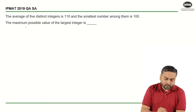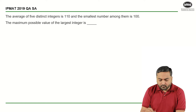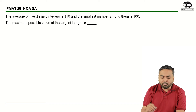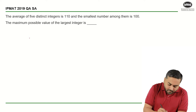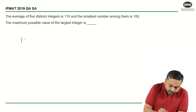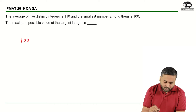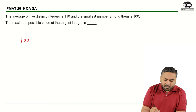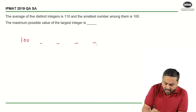So, what is given to us? The average of 5 distinct integers is 110 and the smallest number among them is 100. The smallest number is 100 and the average is 110. We need to find the maximum possible value of the largest number. So I have the second number, third number, fourth number, and the fifth number.